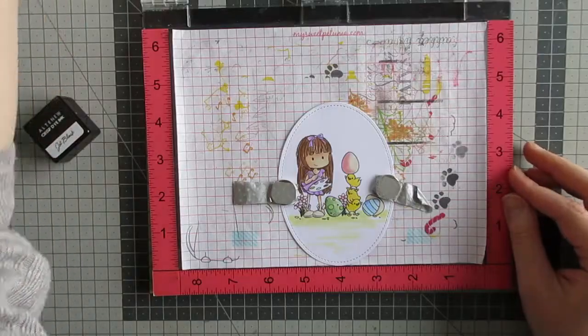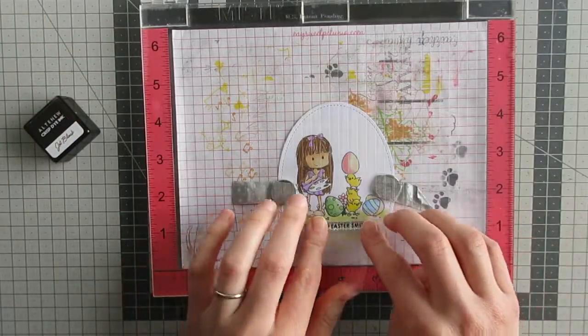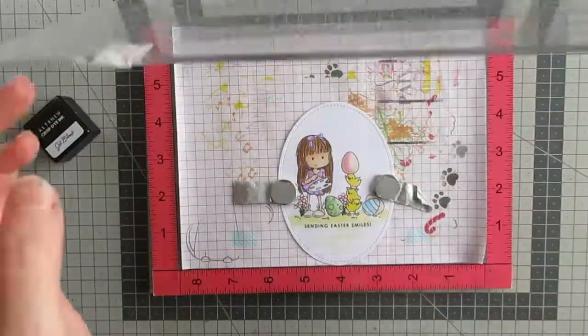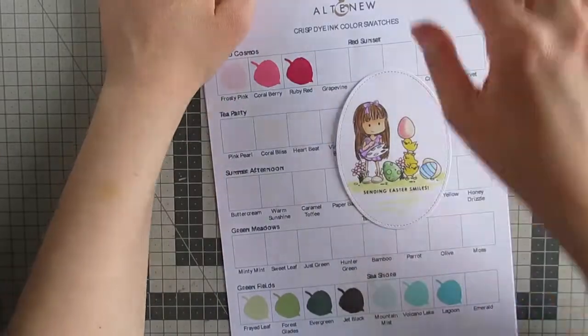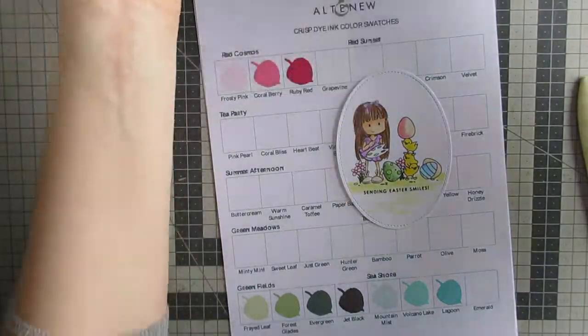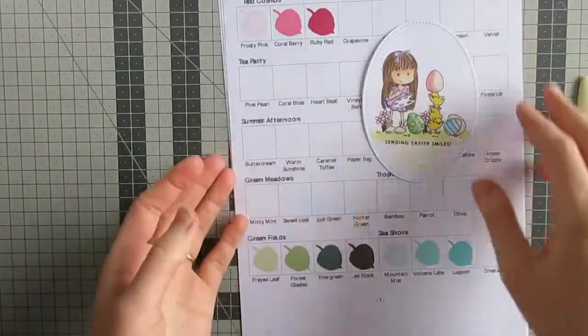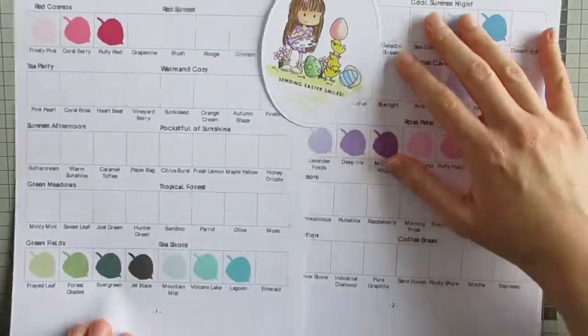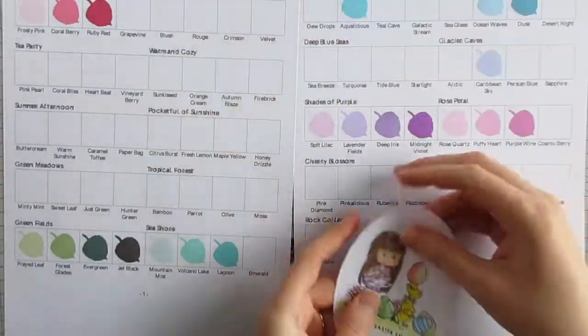With the coloring all finished I added my sentiment which is from Simon Says Stamps Easter Greetings. Next I need to make my card base so I just compared the colors I'd used to my ink swatch chart so that I could work out what colors I wanted.